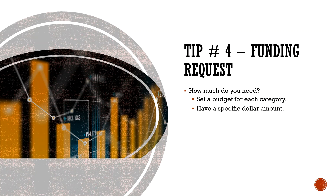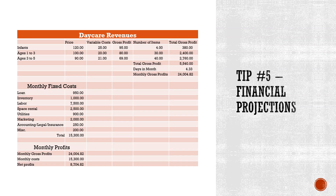Tip number five: how much money are we going to make? A lot of people start daycares because they love children and want a safe, nurturing environment — but if you don't make a profit, you won't be able to service customers or stay in business. Profits are important regardless of your passion. A great way to structure a basic revenue breakdown has three sections: revenues, costs, and profits.